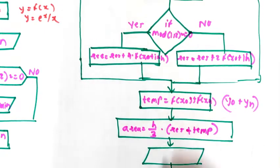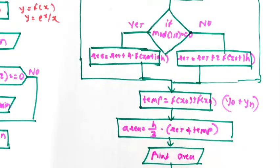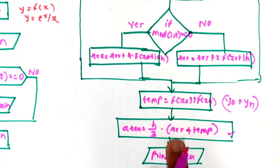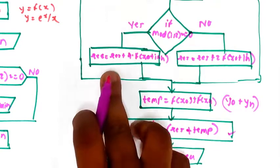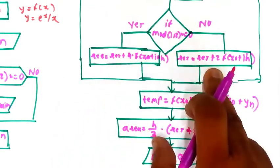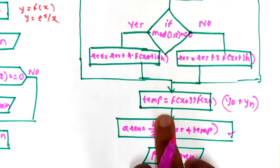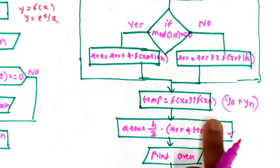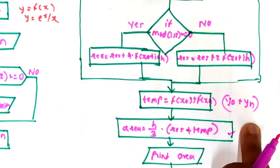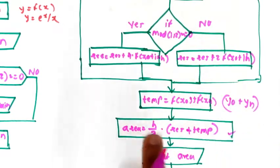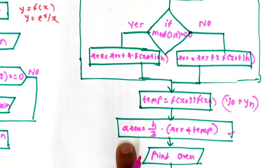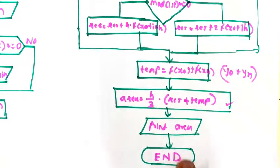The next step is to print the value of area, and at last the program ends. So h by 3 is multiplied by the bracket containing RES — which is either the 4-multiplier or 2-multiplier sum — plus temp, which is y0 plus yn. You add these together to find the area, print the value of area, and then the flowchart ends.